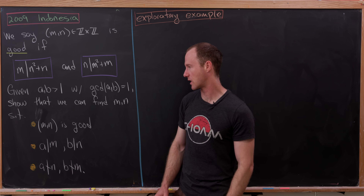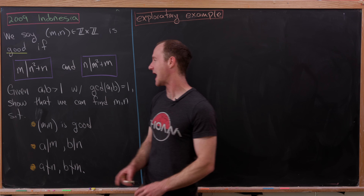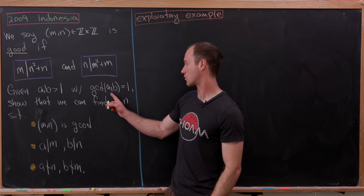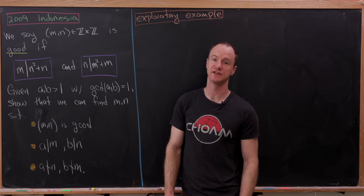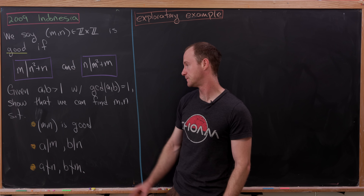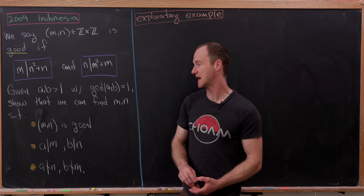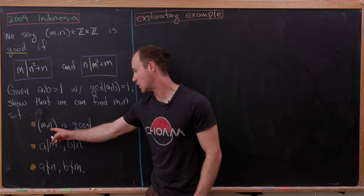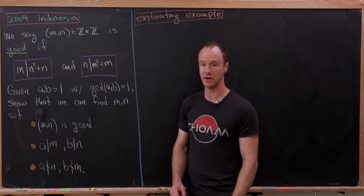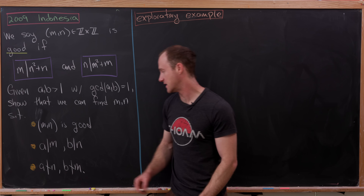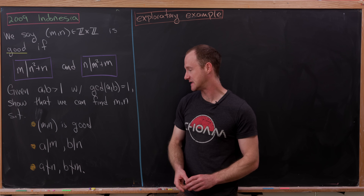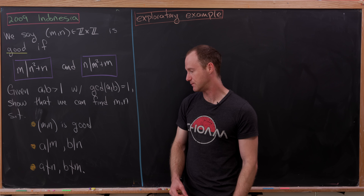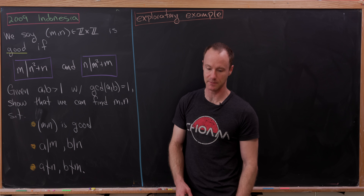On to the problem. Given a and b bigger than 1 that are relatively prime — in other words their GCD is 1 — let's show that we can find m and n so that the ordered pair (m, n) is good, a divides m and b divides n, yet a does not divide n and b does not divide m.